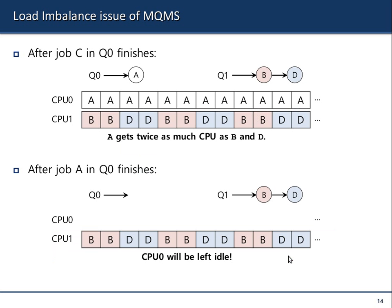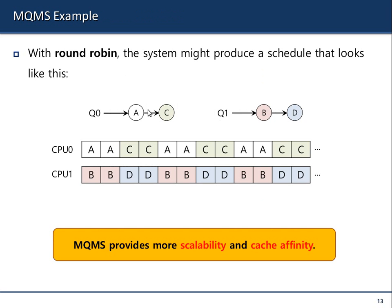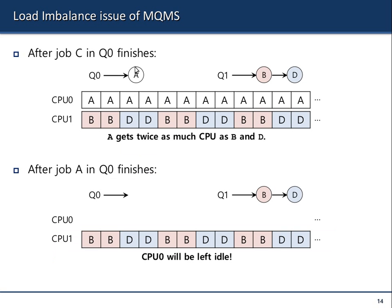The problem is load imbalance. What if, at the start, you have an initial configuration, and after a while C finishes? Queue zero only has one process — A — so CPU zero runs A alone. But CPU one is juggling between B and D. A gets twice as much CPU as B and D. It's a problem.